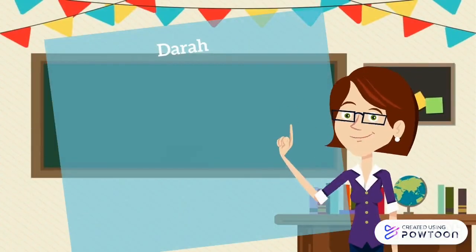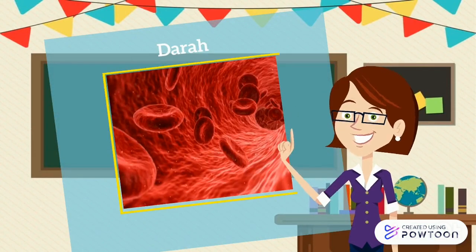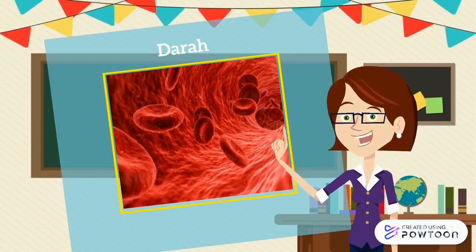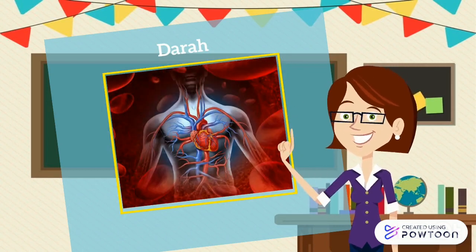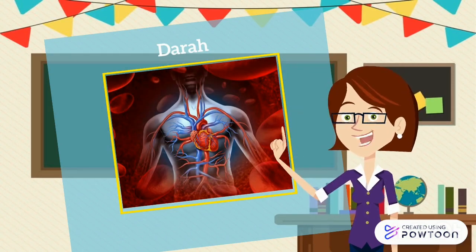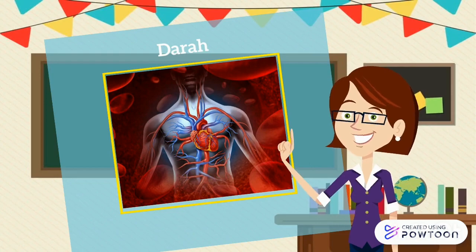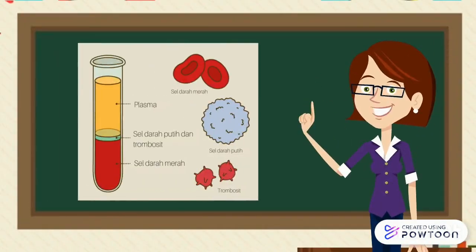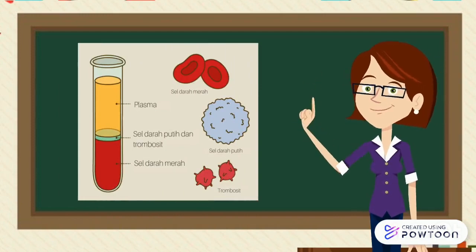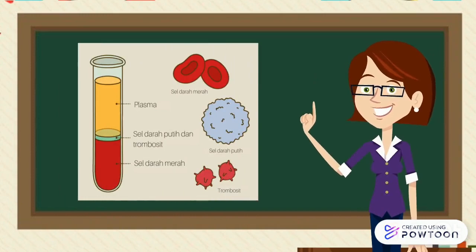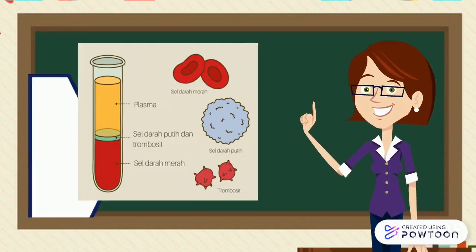Struktur yang ketiga adalah darah. Tubuh manusia rata-rata mengandung sekitar 4-5 liter darah. Darah memiliki fungsi untuk mengangkut nutrisi, oksigen, hormon, dan berbagai zat lainnya ke seluruh tubuh. Tanpa darah bisa dipastikan semua itu sulit disalurkan dengan baik. Darah terdiri dari beberapa komponen, yaitu plasma darah, sel darah merah, sel darah putih, dan keping darah.